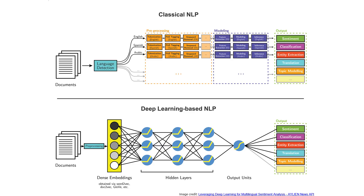There are two main approaches to solving NLP tasks: classical and deep learning. Deep learning approaches have proved better accuracy on big datasets, they contain fewer steps in the pipeline, and they are a lot faster to implement since they don't require feature engineering. That is why for our demo we chose the deep learning based approach.